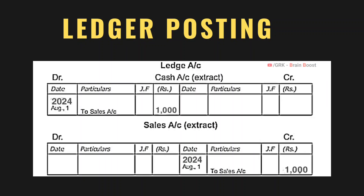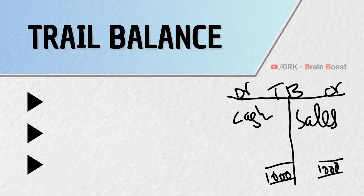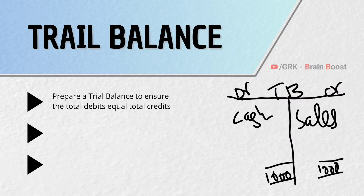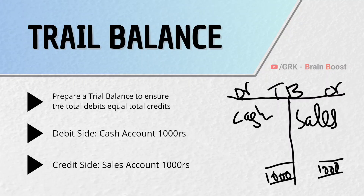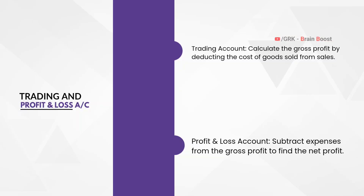Here we do the ledger posting. You can see in the cash account ledger we post the date, particulars, and amount rupees 1,000 in debit. In the sales account ledger, date, particulars, and amount rupees 1,000 in credit. We prepare the trial balance — why? To ensure the total debits equal to the total credits. In this case, the debit side shows cash account 1,000 rupees and the credit side shows sales 1,000 rupees, so debit and credit get tallied.